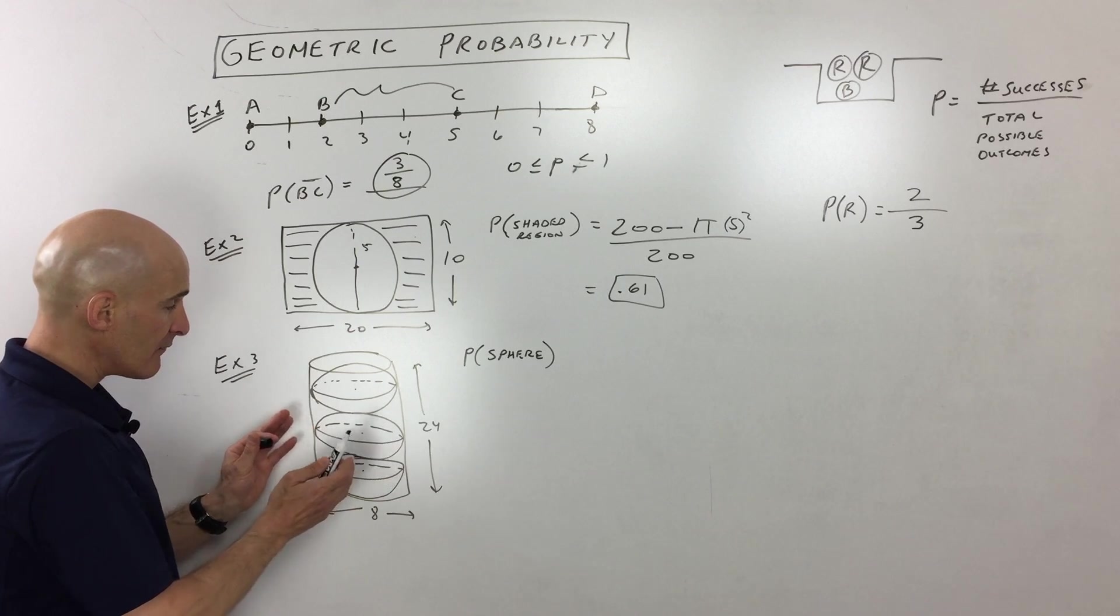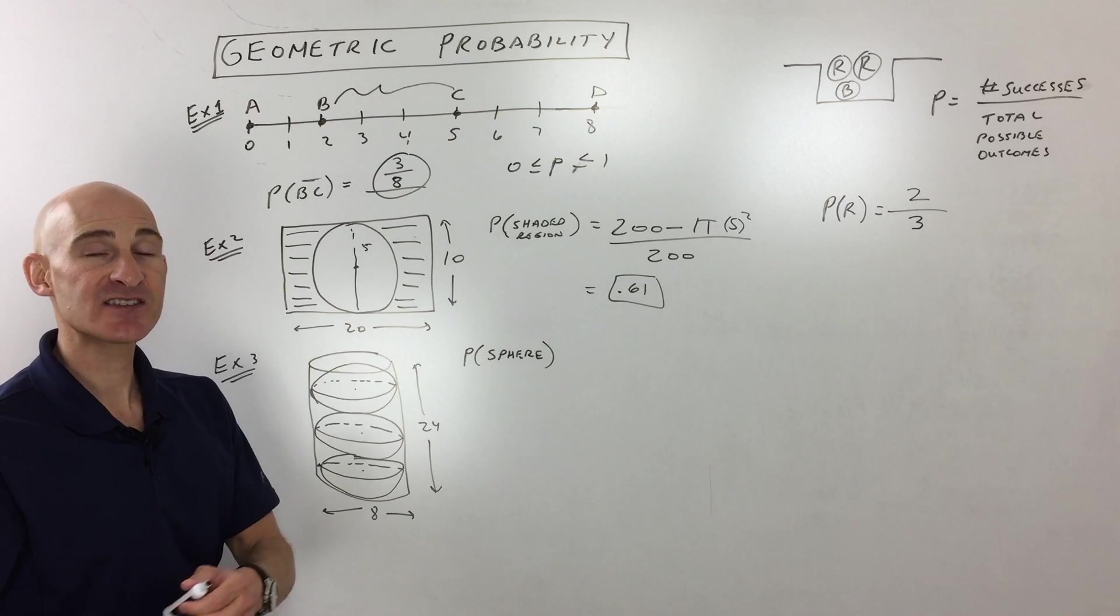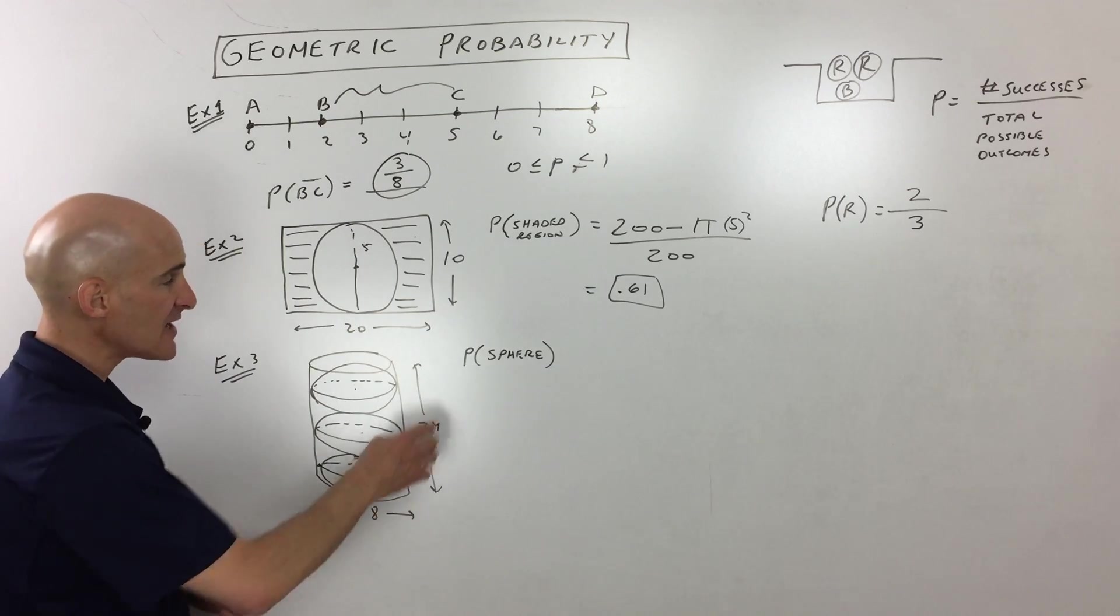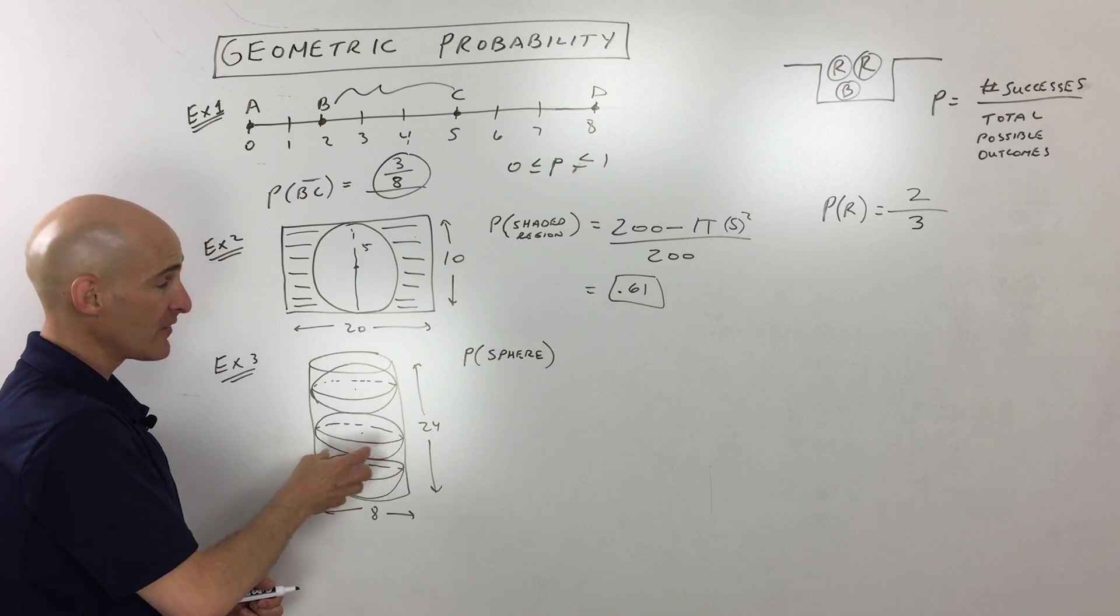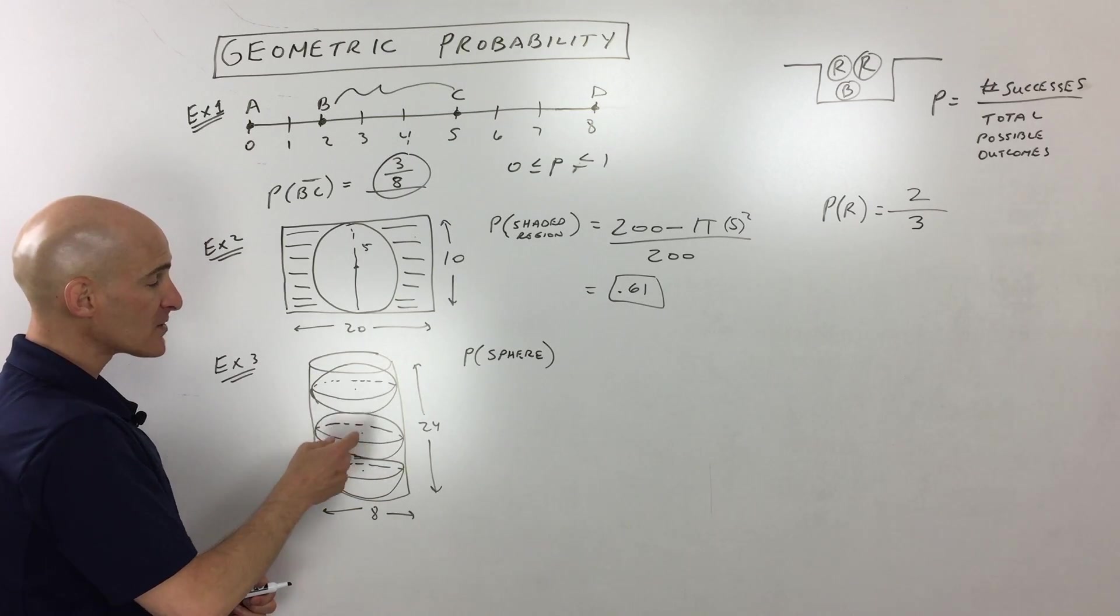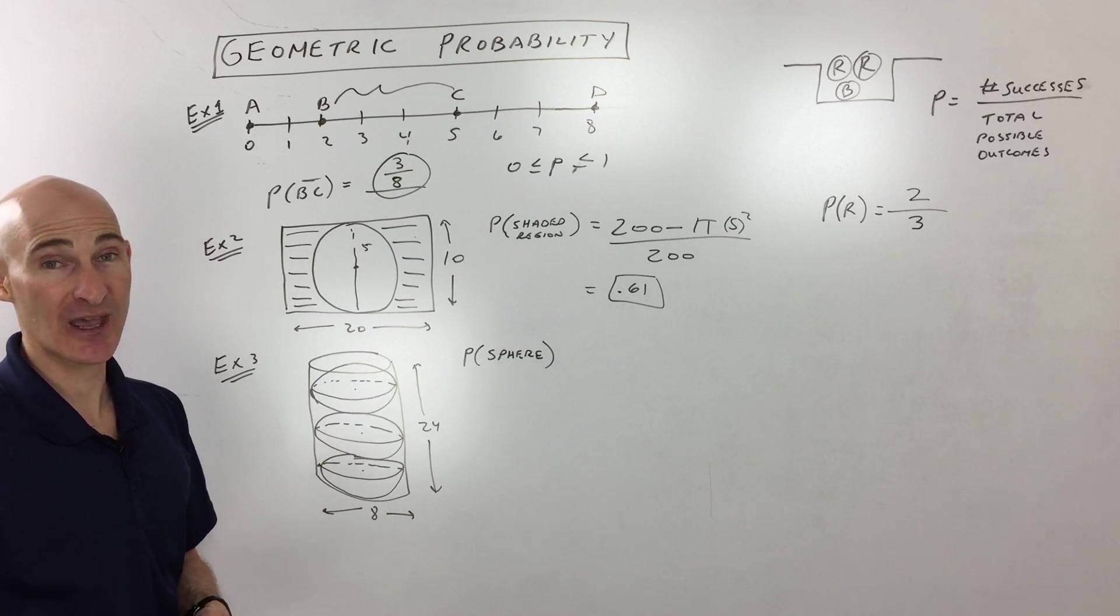If you want to talk about the volume now, we're talking about the volume of success divided by the total volume. In this case, it's asking us, what's the probability that if we pick a point in this cylinder at random, what's the probability that that point lies inside of one of these spheres?